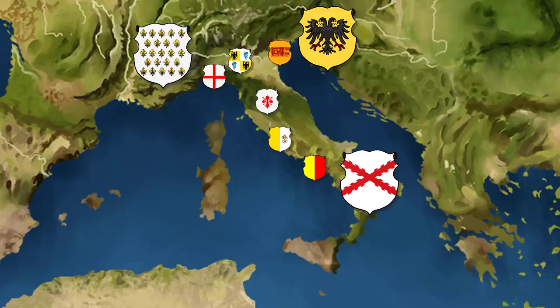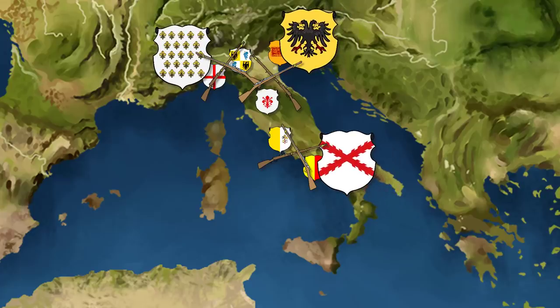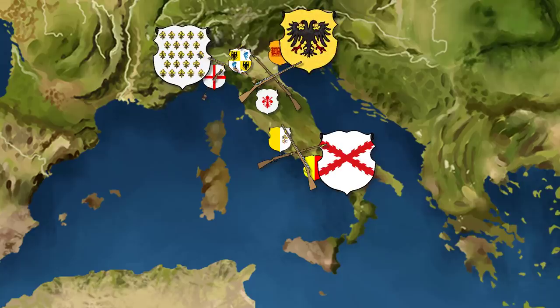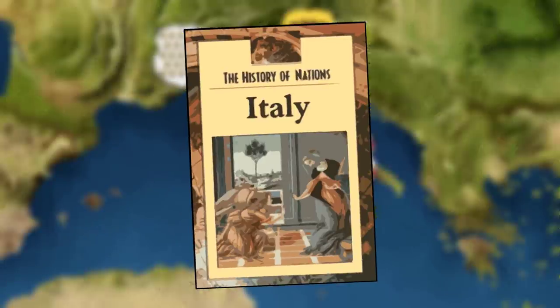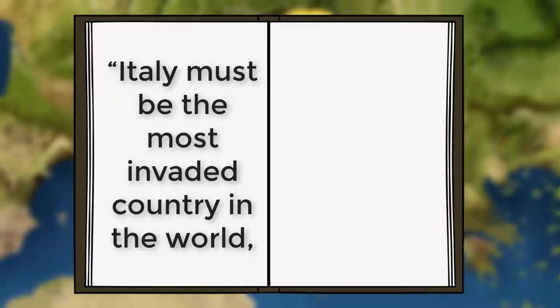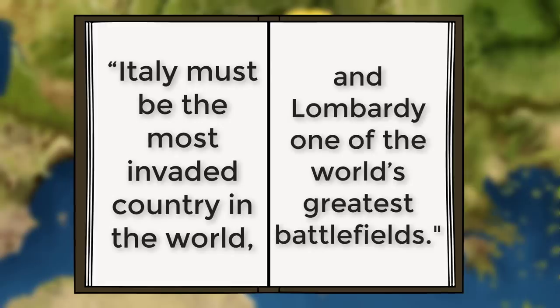These budding principalities were eager to advance their own interests and regularly waged war with one another. In times of invasion, they sometimes aligned themselves not with their Italian counterparts, but with the invaders, allowing Italy to become a playground for the armies of Spain, France, and the Holy Roman Empire during the 15th and 16th centuries. In History of Nations: Italy, Kohlhofer asserts that Italy must be the most invaded country in the world, and Lombardy one of the world's greatest battlefields.